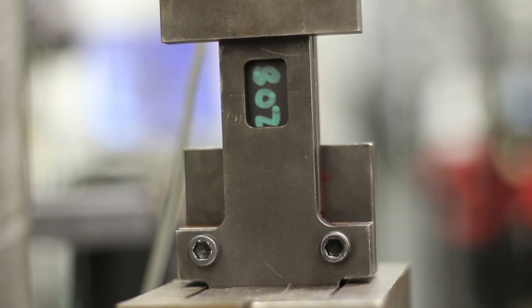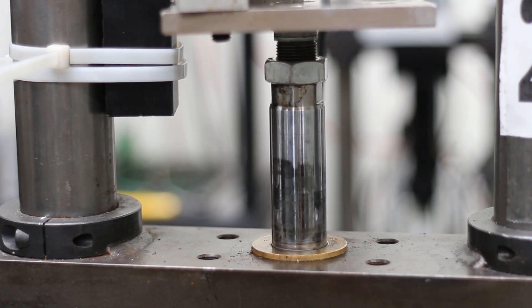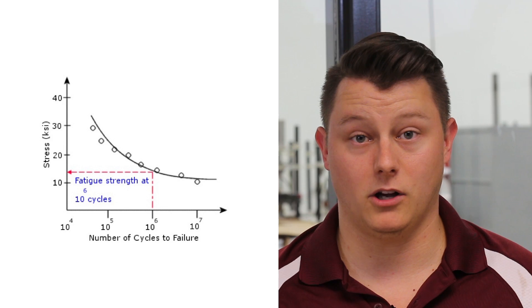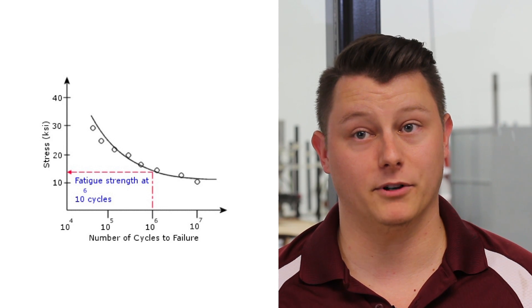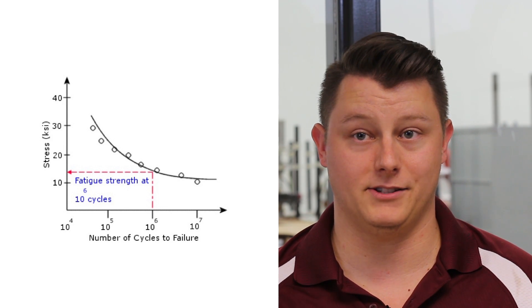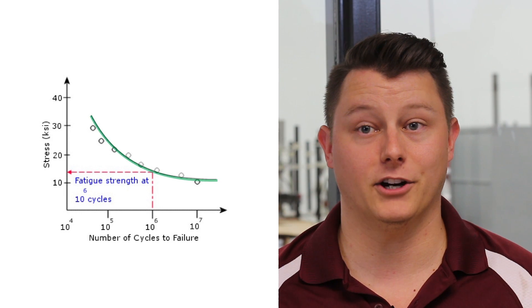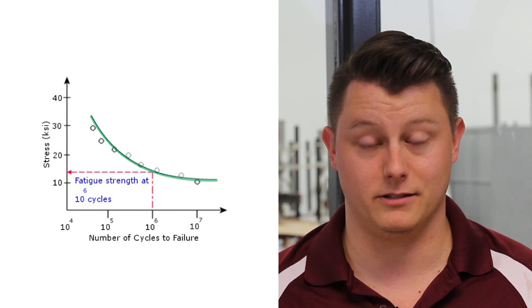Now that we understand more about what an SN curve is, let's talk briefly about how AccuTech project engineers generate these curves. In order to generate a fatigue curve, multiple specimens, also known as coupons, must be tested at varying load levels. The results, or number of cycles to failure, are plotted against the corresponding stress ranges. The SN curve is the result of these data points.